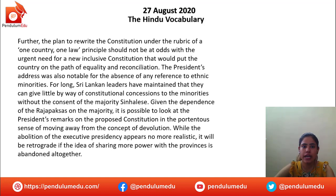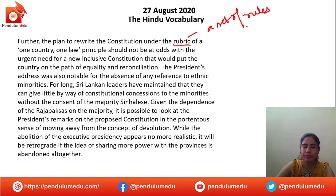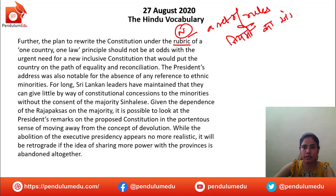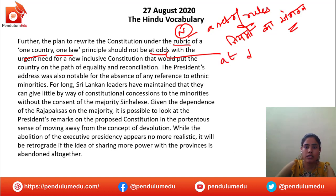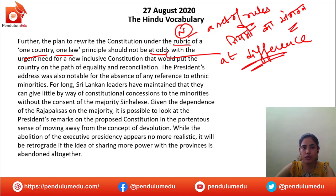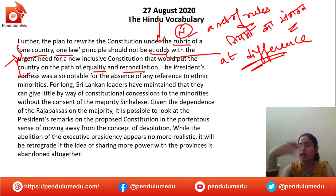Further, the plan to rewrite the constitution under the rubric — rubric is a noun meaning a set of rules and regulations — one country, one law principle should not be at odds, meaning should not be at difference, with the urgent need for a new inclusive constitution that would put the country on the path of equality and reconciliation.